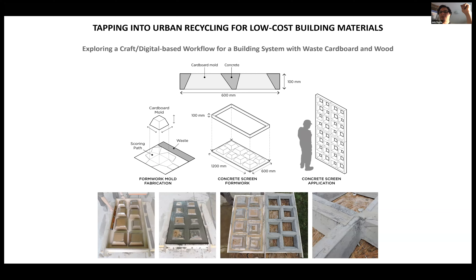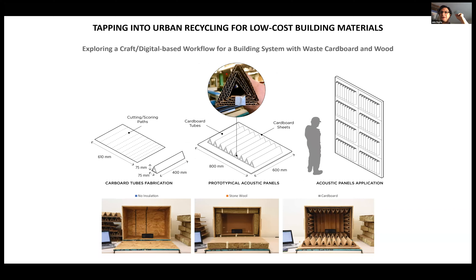Another use of the parametric system is to design molds that can be used for casting concrete to create screen walls — similar to Elena's perforated walls — which can filter sunlight. These can be built in parts with very little material. Waste cardboard can also be used as an insulation material: the same triangular tube designed with the parametric system was tested as an insulation component. The results are decent — cardboard is not as good as stone wool — but in a context where you don't have resources to buy conventional insulation yet have access to nearly free material from the waste stream, it's a big game changer.